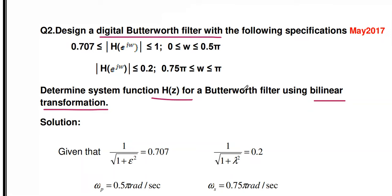Here we are going to design a digital Butterworth filter. In IIR filter design there is no straight procedure to directly design the digital IIR — first we have to design the corresponding analog IIR, then convert it using impulse invariant method, bilinear transformation, or matched Z-transform method. Here we are going to use bilinear transformation. This is a very important university question — May 2017.